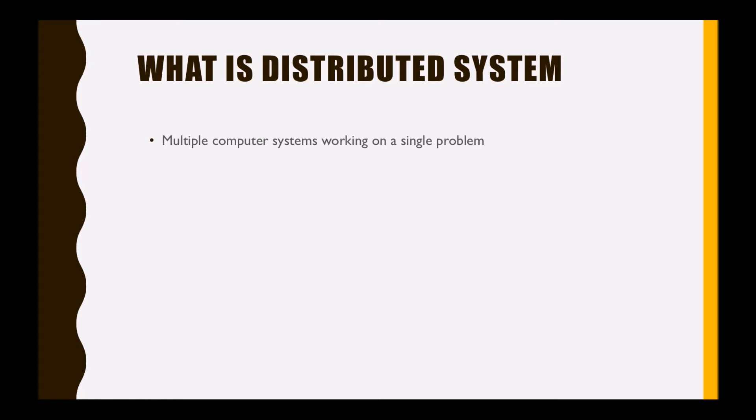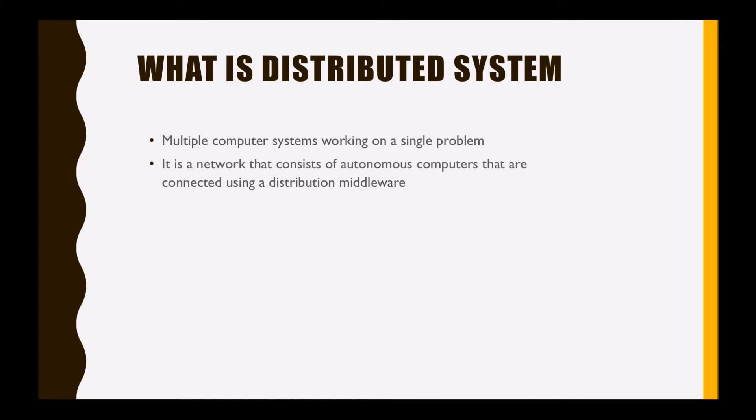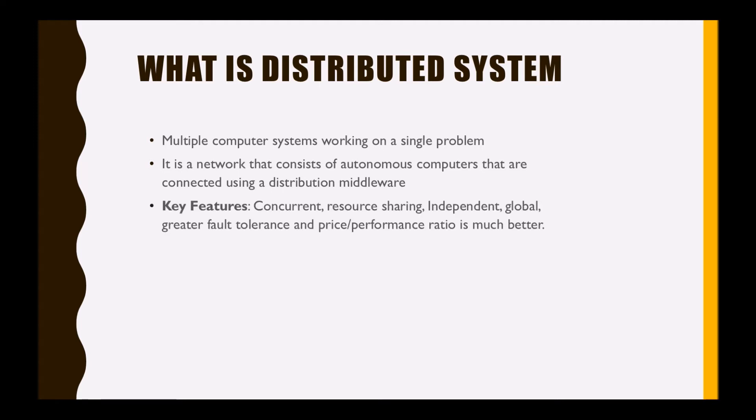In engineering terms, a distributed system is a network that consists of independent computers connected using a distribution middleware. There are a few key features of the distributed system.